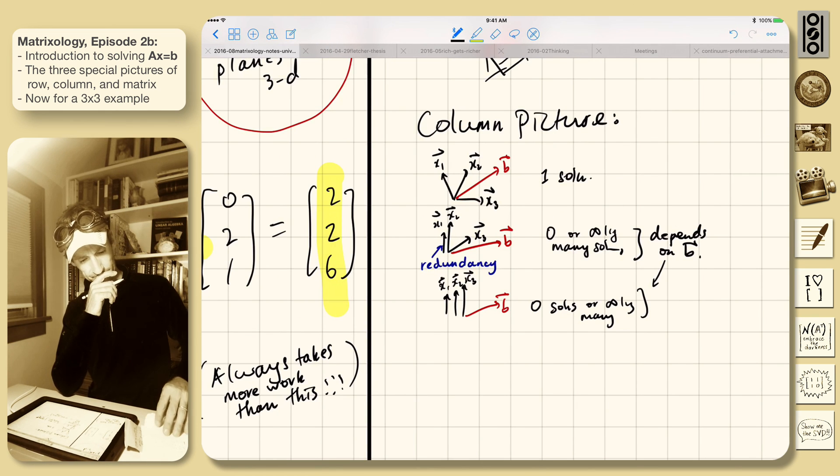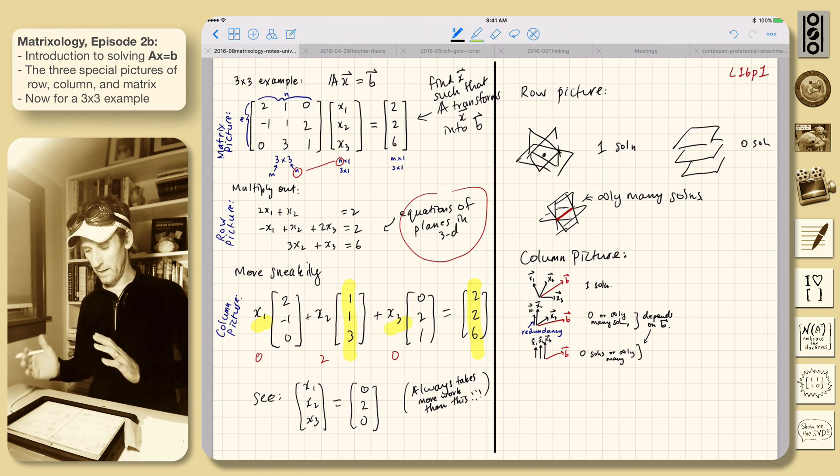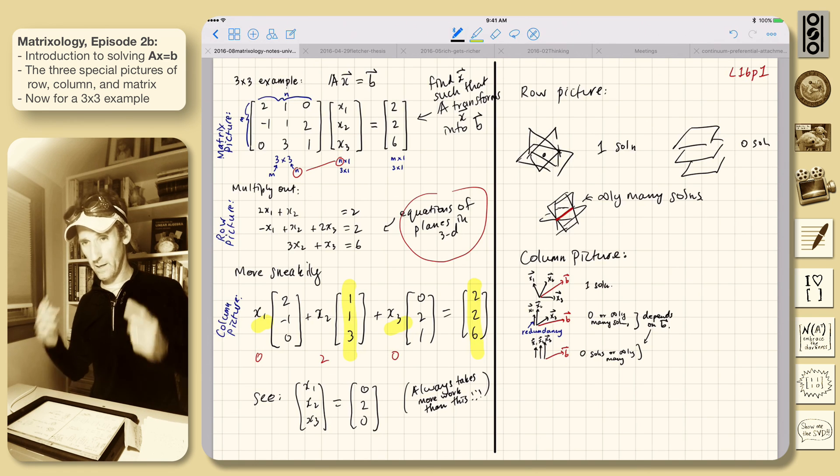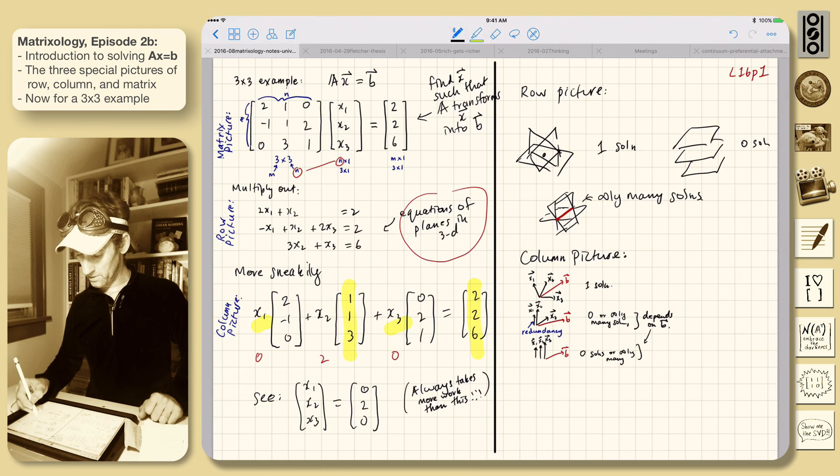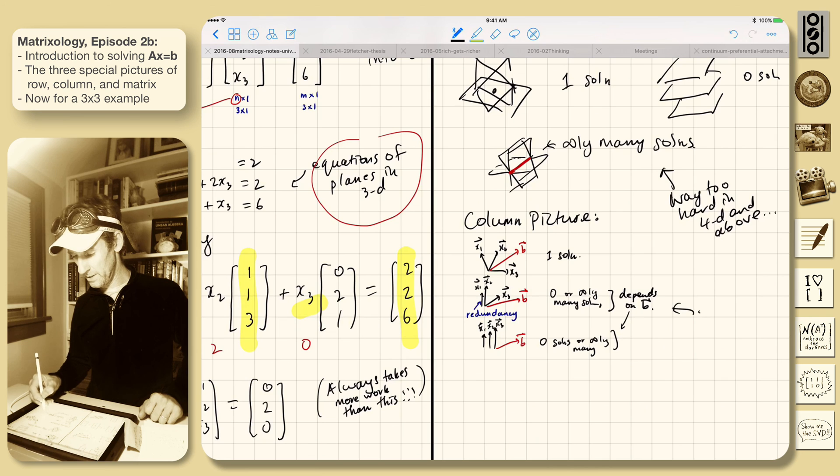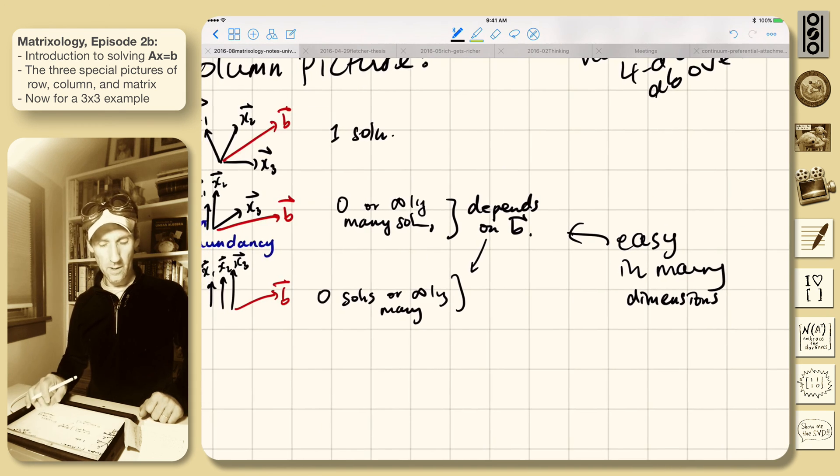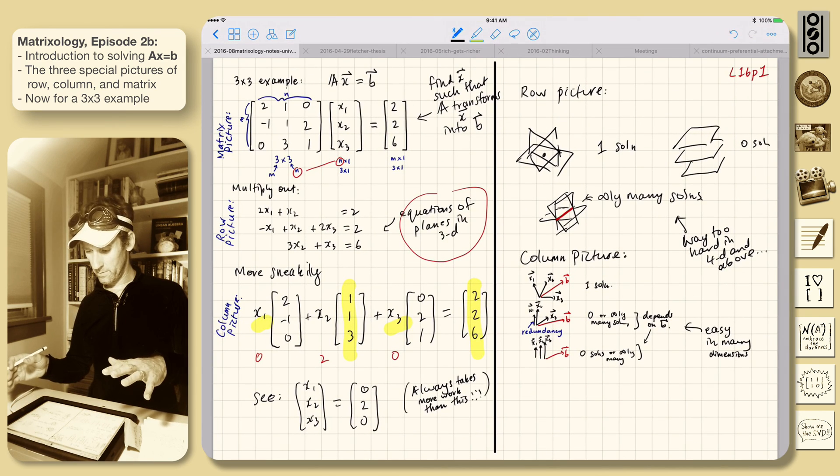All right. So that's good. It's just a little extra example here for a 3×3, just to help you kind of move out. And it's why we don't think about the row picture in our heads geometrically for 4×4s. Right? So this is way too hard in 4D and above, unless you have a very special mind. But this picture is easy to generalize, easy in many, many dimensions. That's always good. Okay. Awesome. All right. So that's just a little extra piece there.